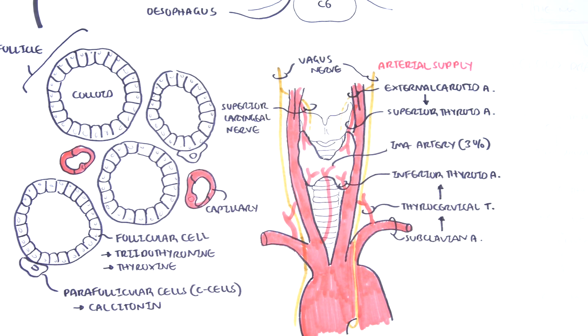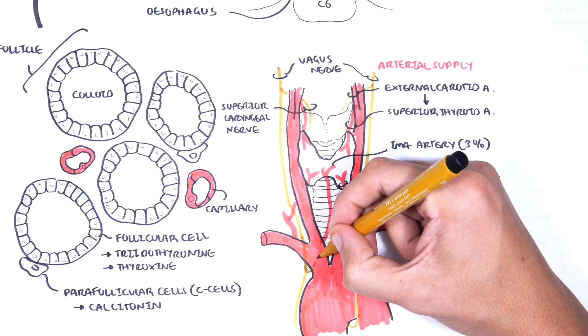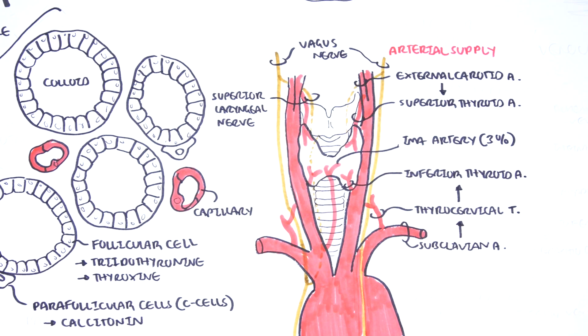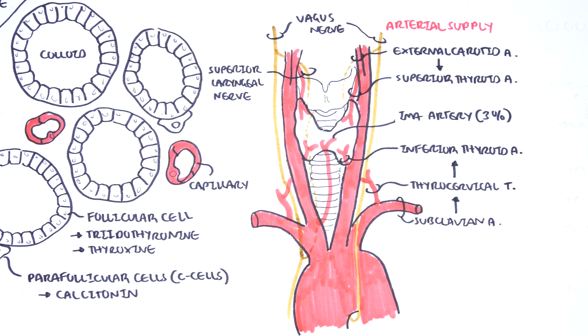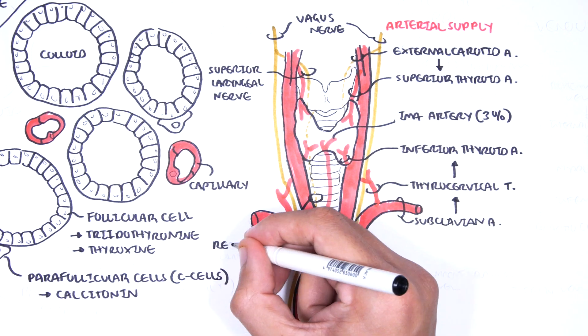The right vagus nerve continues down and gives off another branch, the right recurrent laryngeal nerve which may loop under the brachiocephalic artery and travel up supplying the thyroid gland but mainly supplying the laryngeal muscles.